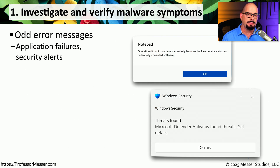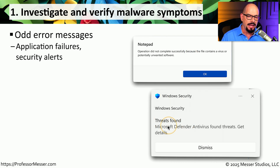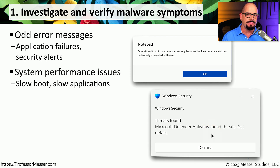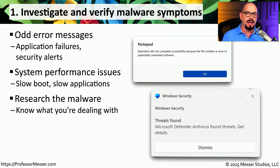The first step is to recognize the symptoms that could indicate that malware has been installed on your computer. Sometimes this is very obvious — a message saying the operation did not complete successfully because the file contains a virus or potentially unwanted software, or Windows Security reporting that threats have been found by Microsoft Defender Antivirus. But often it's not this obvious — the system might take longer to boot, run more sluggishly than normal, or show unusual error messages in an application. All of these could be symptoms of malware, so it's always a good idea to perform additional research.